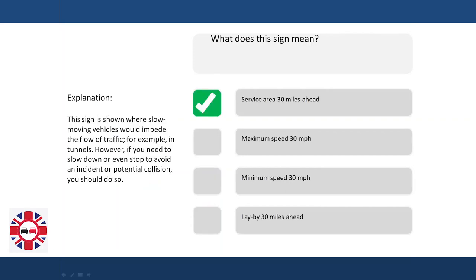Explanation: This sign is shown where slow-moving vehicles would impede the flow of traffic, for example in tunnels. However, if you need to slow down or even stop to avoid an incident or potential collision, you should do so.